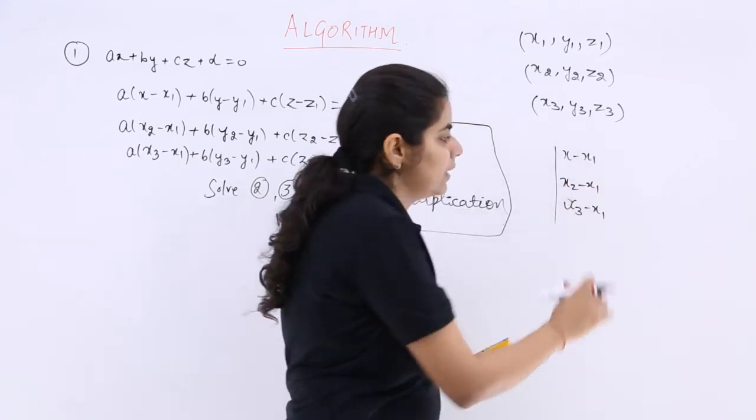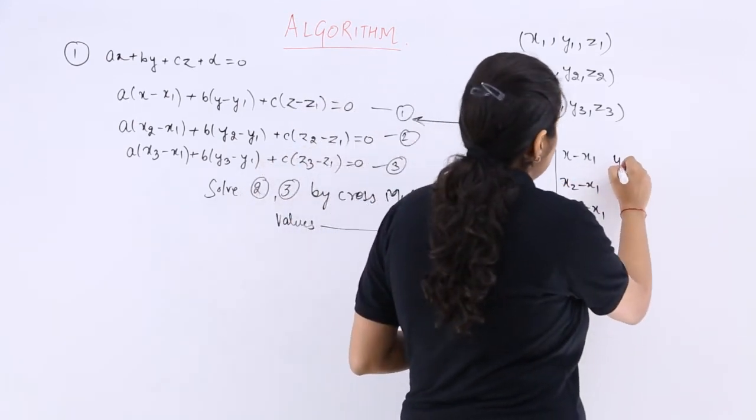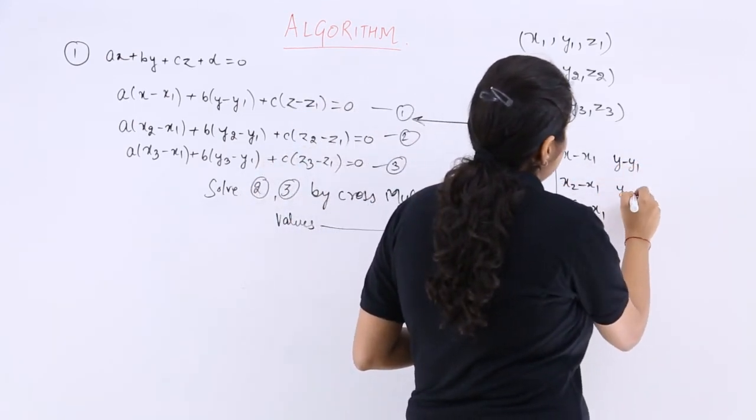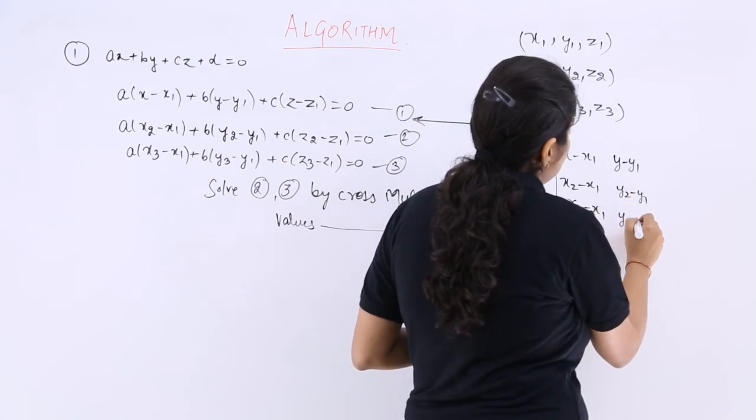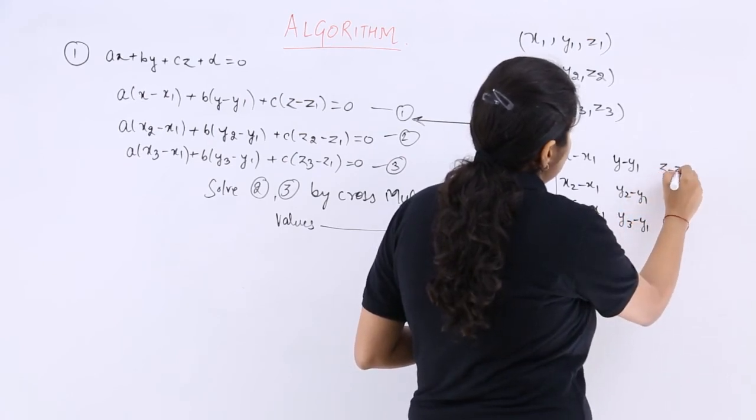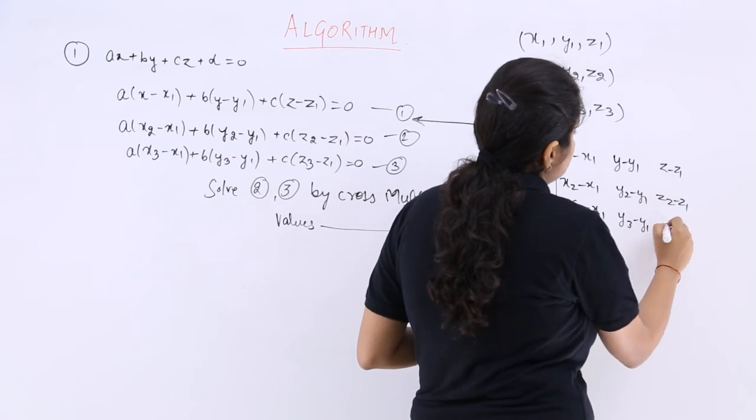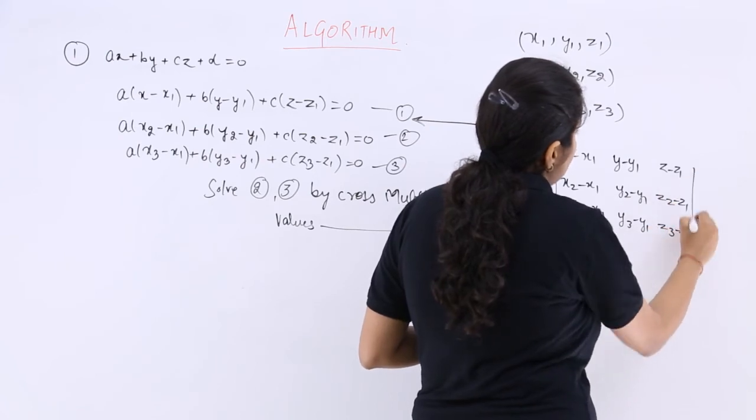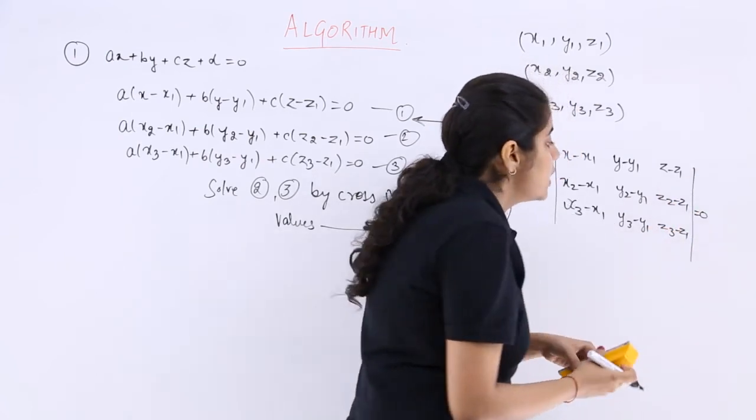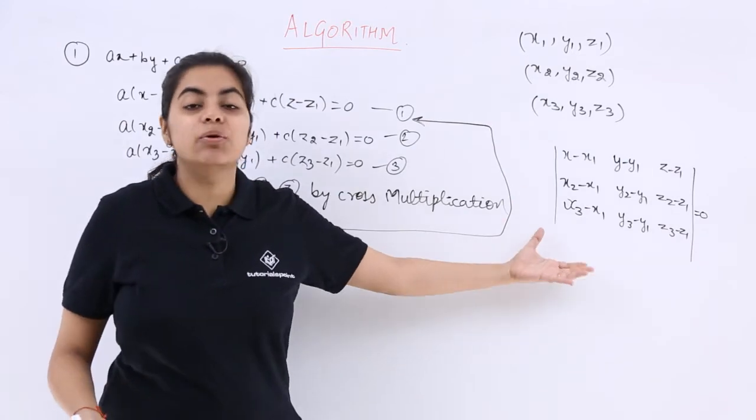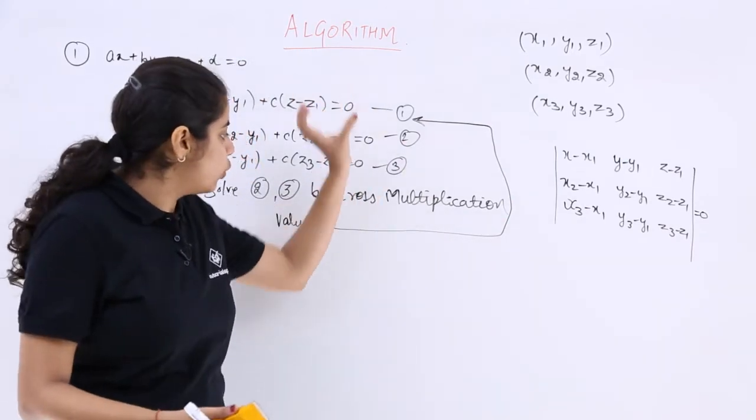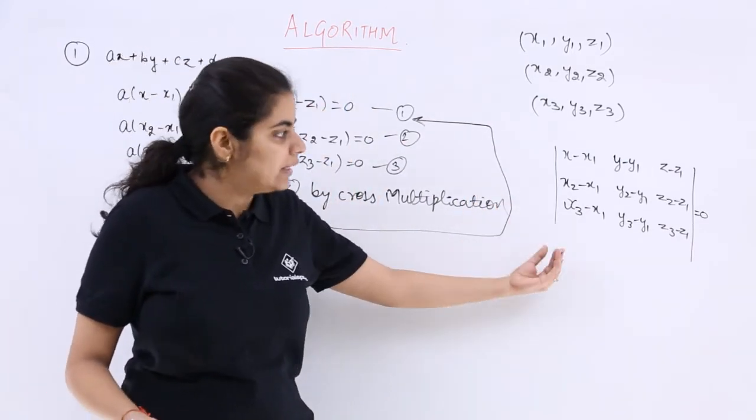So it says x minus x1, x2 minus x1, x3 minus x1, y minus y1, y2 minus y1, y3 minus y1, z minus z1, z2 minus z1, z3 minus z1, and that is equal to 0. So if you solve this determinant, again you are going to get the same value as you solve the whole by this method.